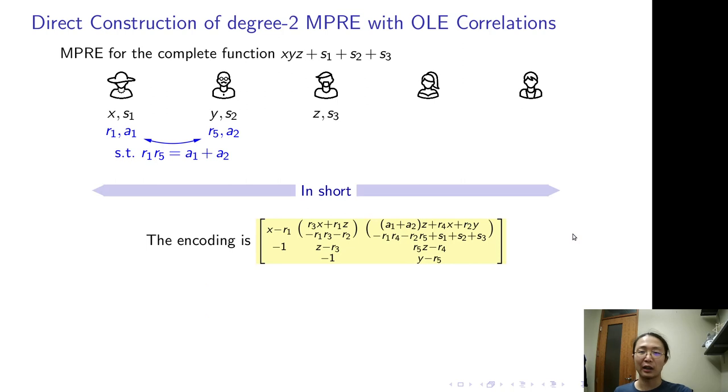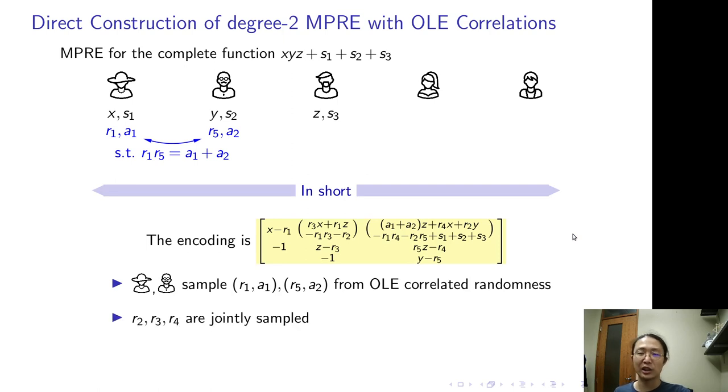In short, the MPRE outputs the following matrix. Randomness R1 and R5 are sampled from the OLE correlation between two parties, and the rest of the randomness can be jointly sampled.